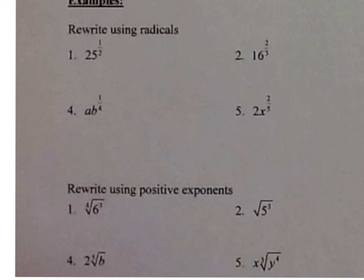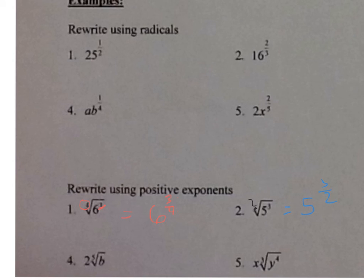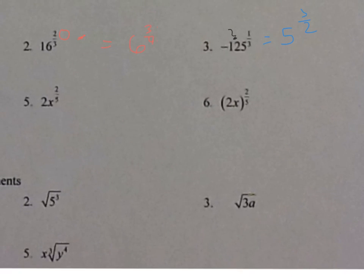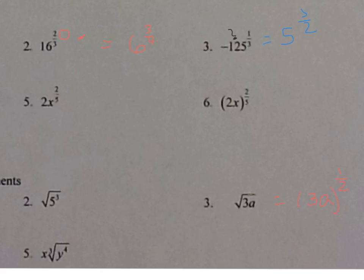Now going the other way — from radical form to fractional exponent form. Remember: the power is the exponent on the radicand, and the root is the number in the radical symbol. Example 1: the fourth root of b to the third — power is 3, root is 4, so it's b to the three-fourths power. Example 2: the square root of 5 — when no number is written in the radical, the root is 2, so it's 5 to the one-half power. Example 3: the square root of 3a — the whole thing is under the radical, so it's (3a) to the one-half power. You must have parentheses; writing 3a to the one-half without them means only a is under the radical.